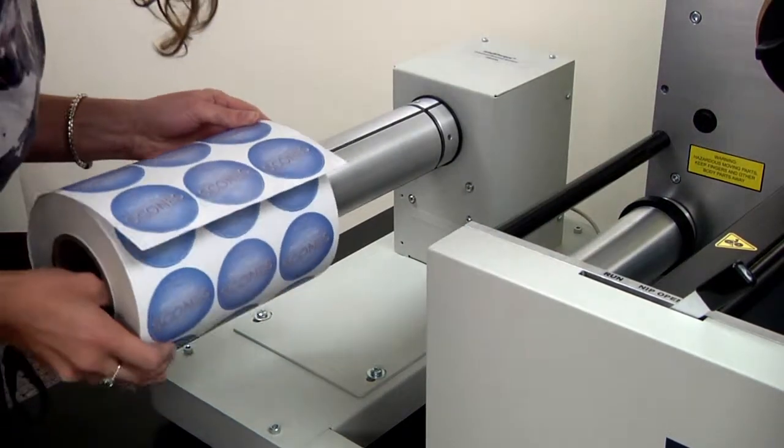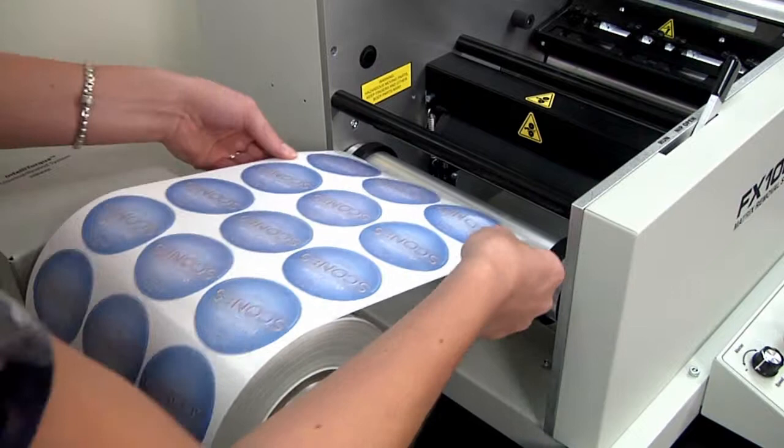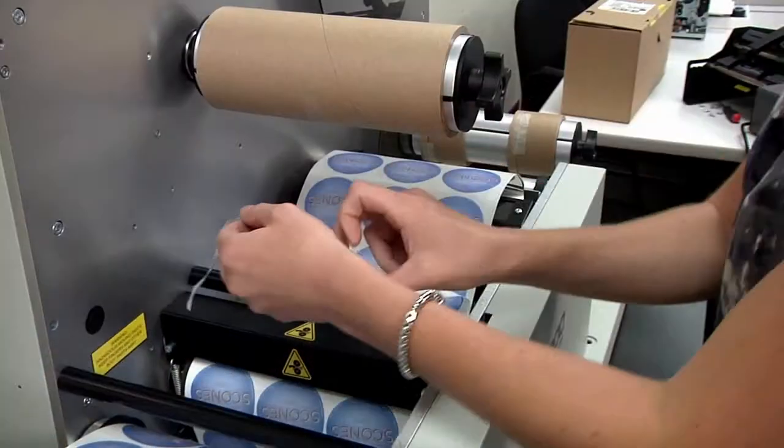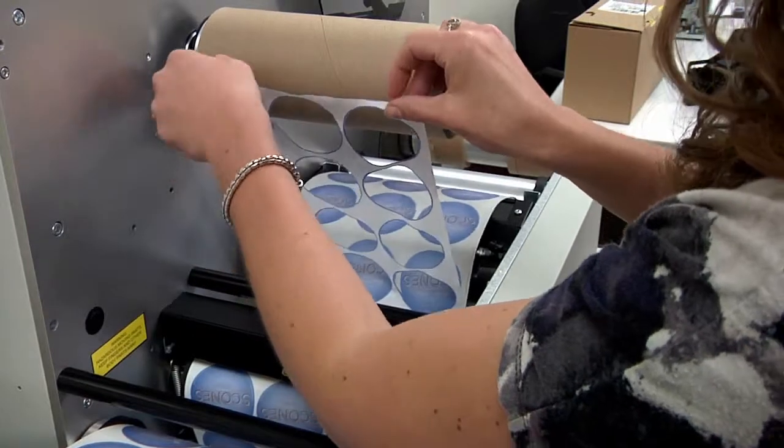First, place the printed roll of labels on the unwinder and guide the label stock through the nip roller. Place the waste label matrix on an empty core on the upper mandrel.